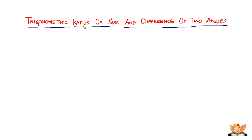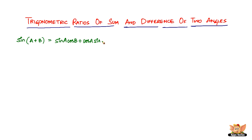In this video we're going to look into trigonometric ratios of sum and difference of two angles. To begin with, we have sine of A plus B for all values of A and B. The first one is sine of the sum of two angles: sine of A plus B, which is equal to sine A cos B plus cos A sine B.